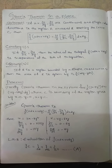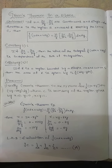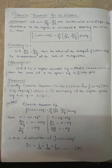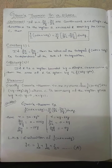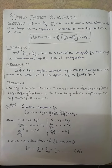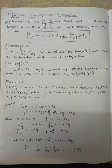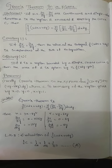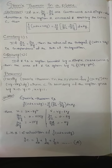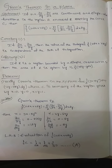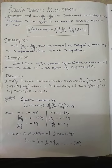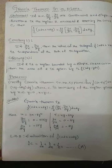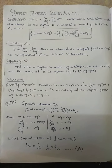Today I am telling about Green's theorem in a plane. Statement: If u, v, ∂u/∂y, ∂v/∂x are continuous and single-valued functions in the region R enclosed by the curve C, then integral C (u dx + v dy) = double integral R (∂v/∂x − ∂u/∂y) dx dy. Corollary: If ∂v/∂x = ∂u/∂y, then the value of the integral C (u dx + v dy) is independent of the path of integration.